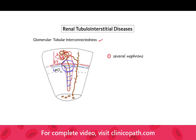Not only does a single artery supply several nephrons, but the architecture of the vasorecta means that the distal proximal convoluted tubule and the distal convoluted tubule in fact have a deoxygenated blood supply. Combined with the fact that we have a very high osmolality there, this makes them very susceptible to hypoxic injury.